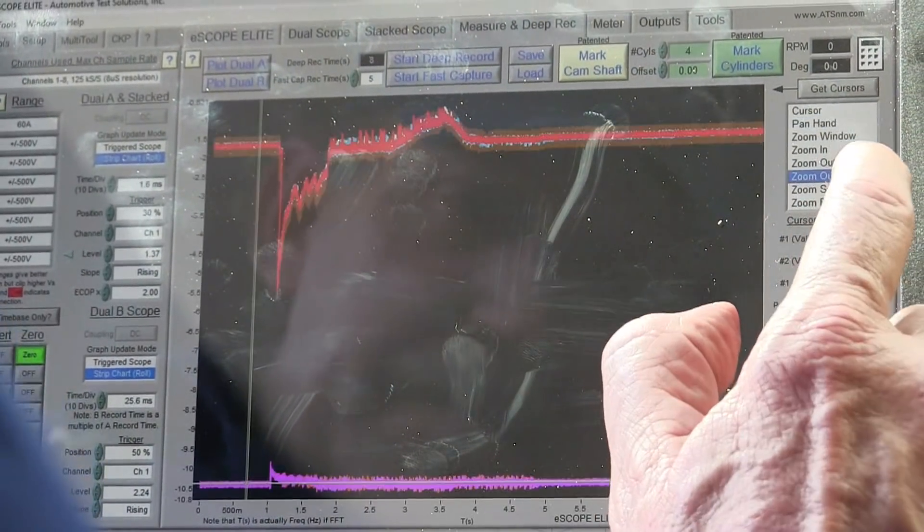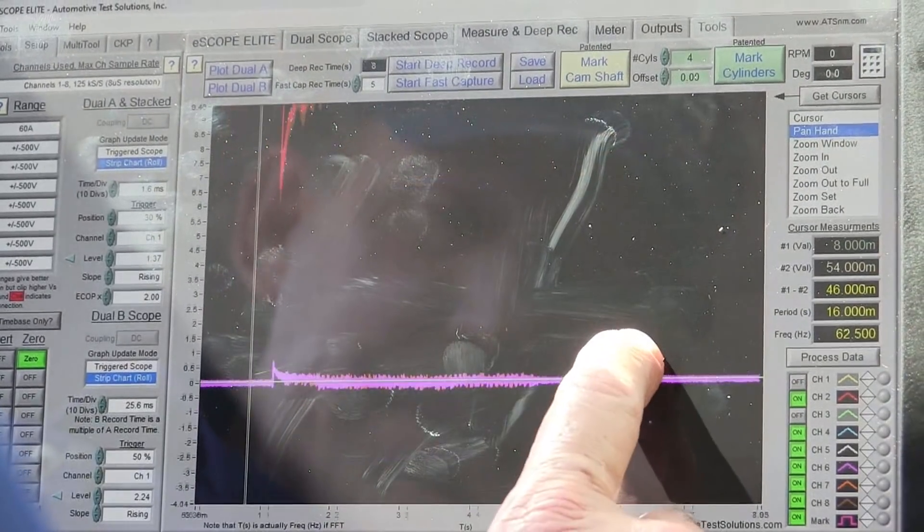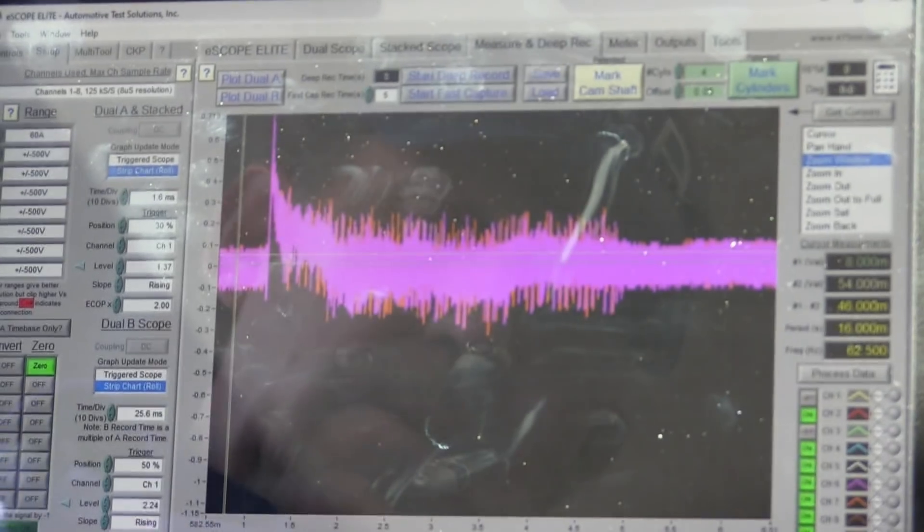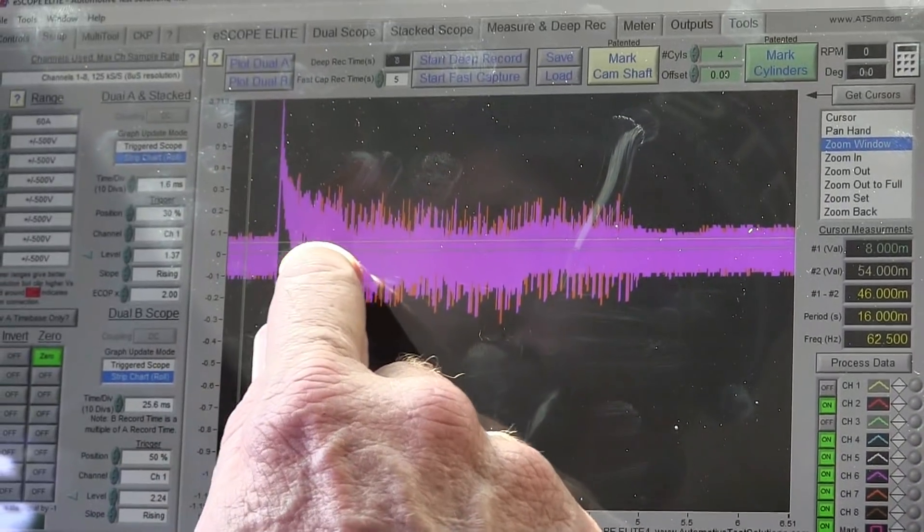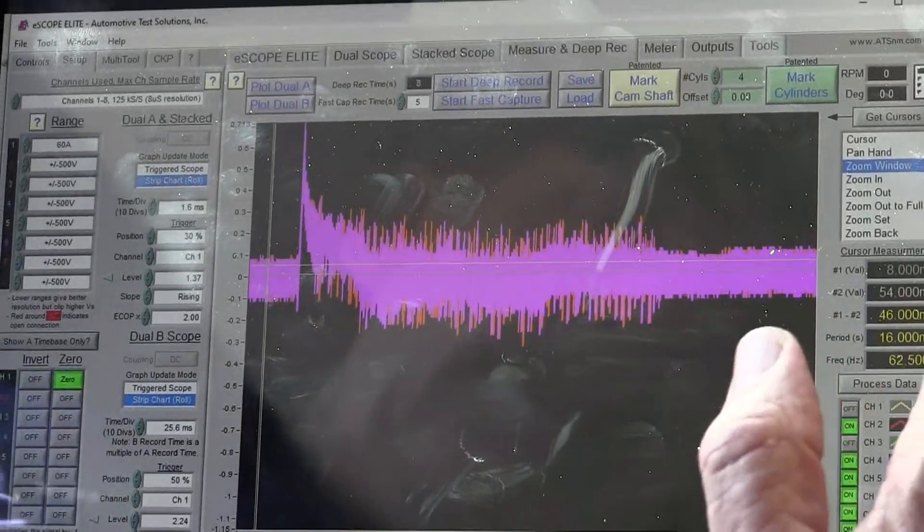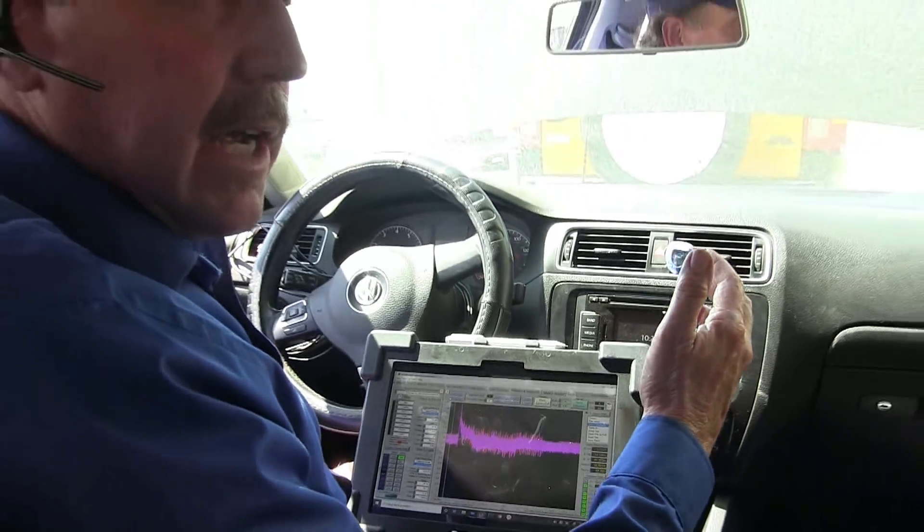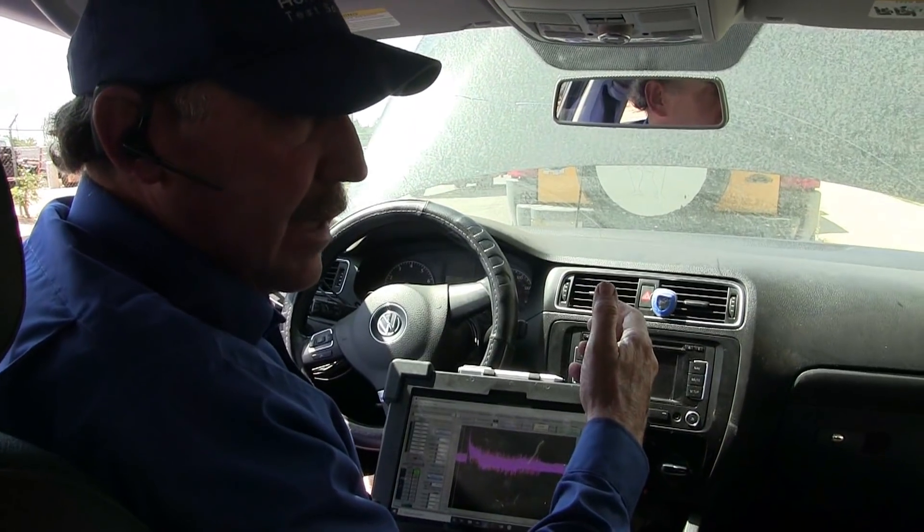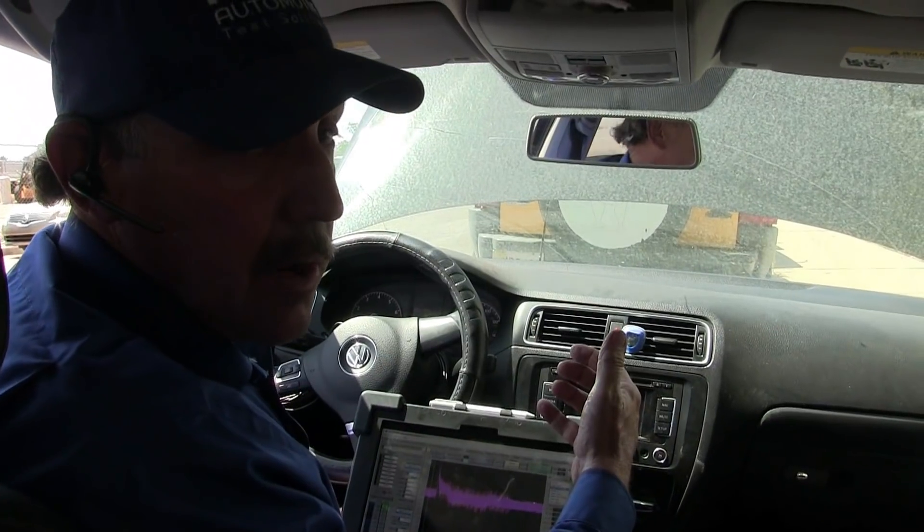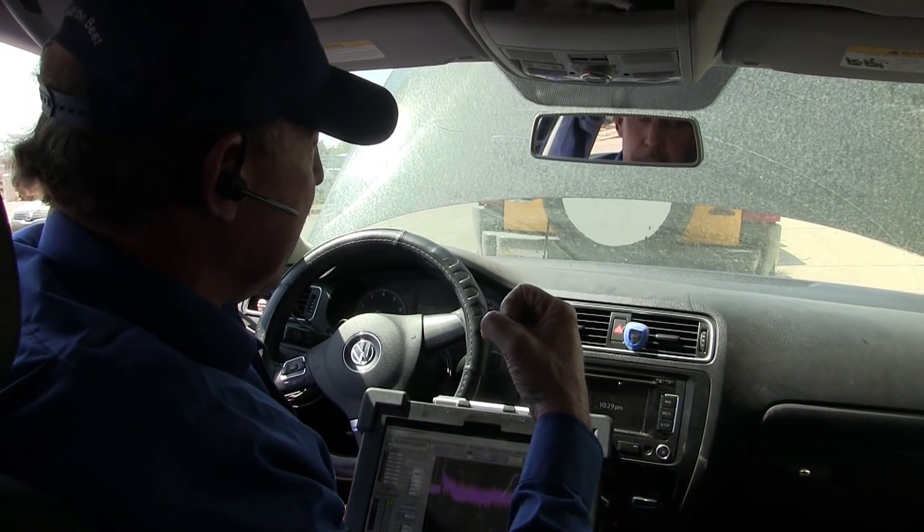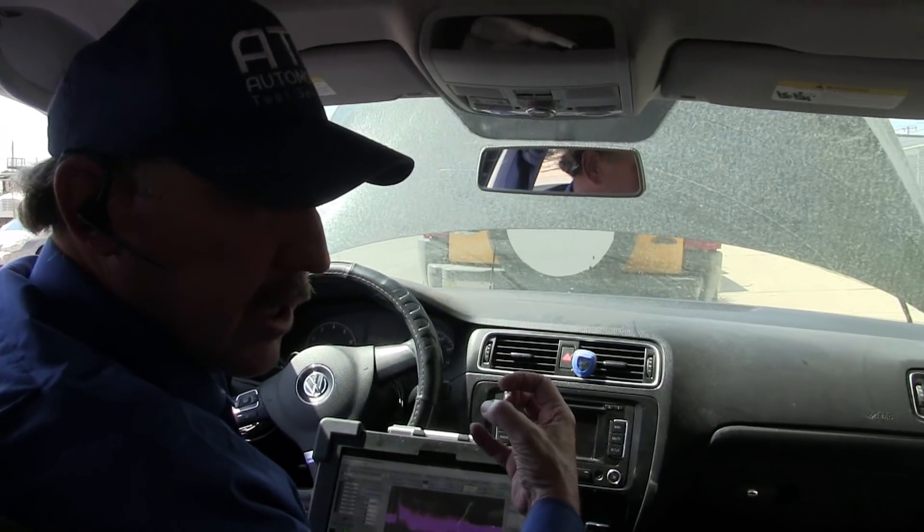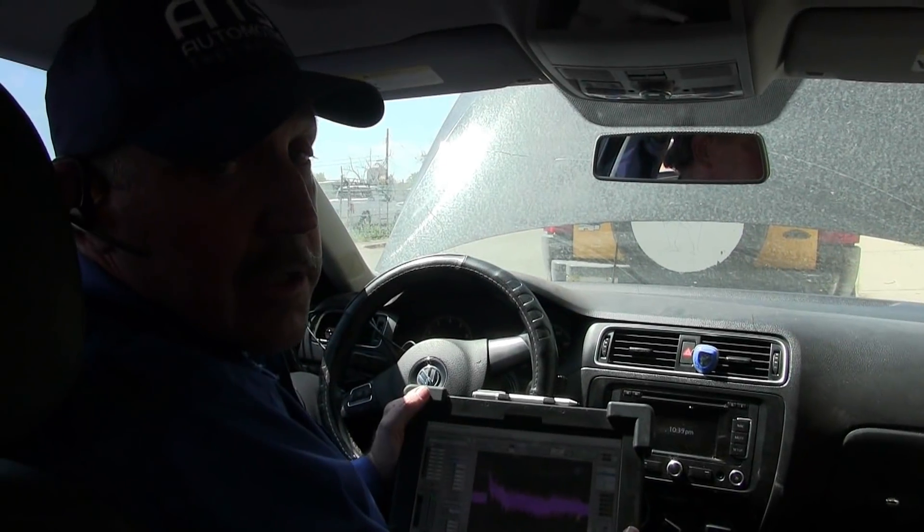So what this means is all the powers have been tested. All the grounds have been tested. And I don't have some kind of an inrush from pulling a high amount of current, because something is shorted that the computer is controlling. Now that we've looked at the scope, let's go ahead and look at the scan tool.